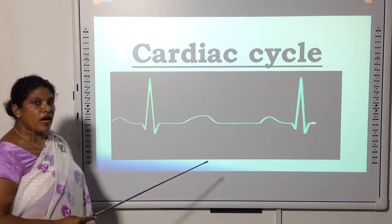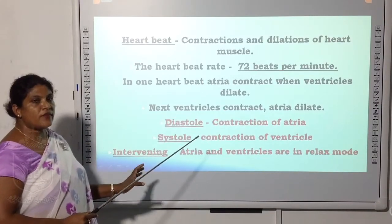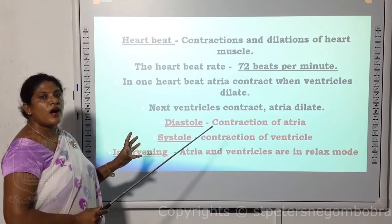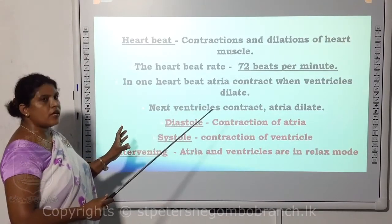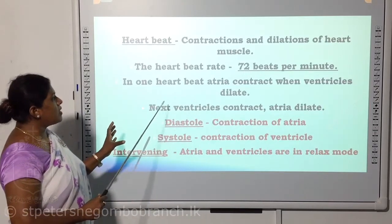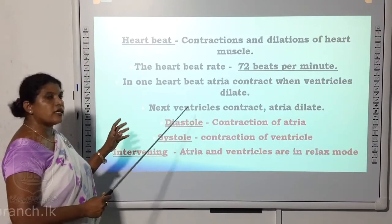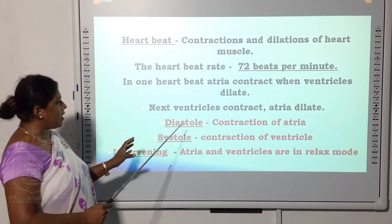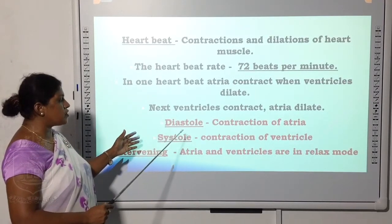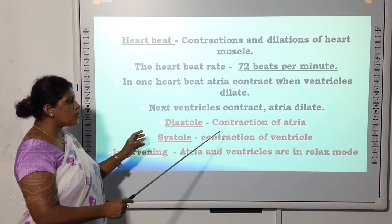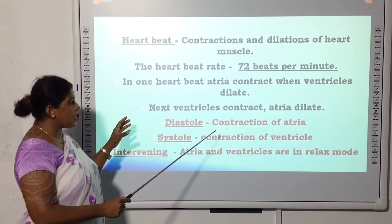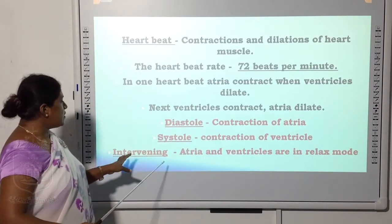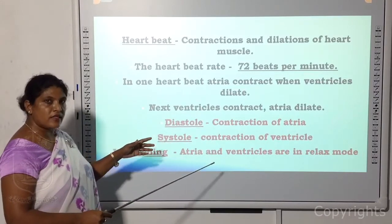Next, we will discuss the cardiac cycle. First, what is the heartbeat? The heartbeat is the contraction and relaxation of heart muscles. The heartbeat rate of a healthy person is 72 beats per minute. In one heartbeat: atria contract while ventricles relax; then ventricles contract while atria relax (diastole or dilation). Diastole means contraction of the atria — the upper two chambers. Systole means contraction of the ventricles — the lower two chambers. The intervening period is the relaxed mode of both atria and ventricles.